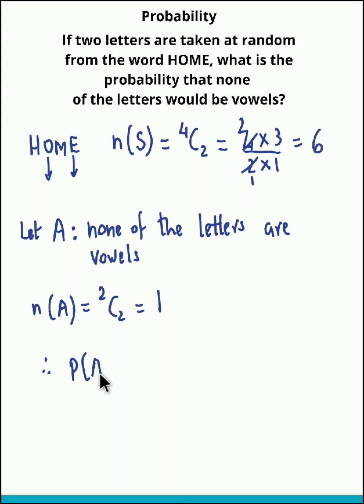Therefore, probability of event A could be calculated as n(A) upon n(S), so the final value is one upon six. So this is how you obtain the required probability.